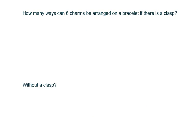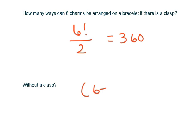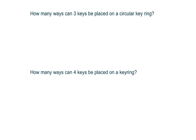How many ways can six charms be arranged if there is a clasp? That's linear: 6 factorial over 2, which equals 360. Without a clasp, that's (6 minus 1) factorial over 2, which equals 60.